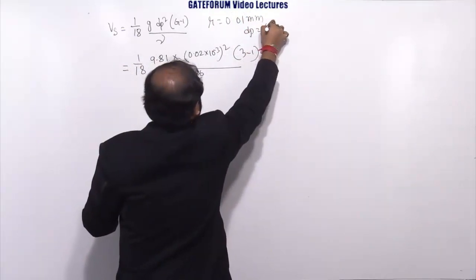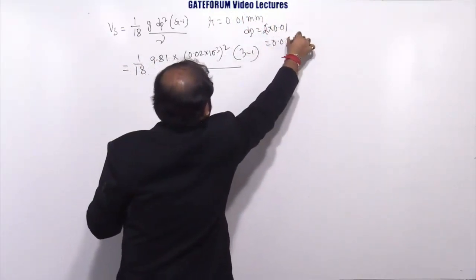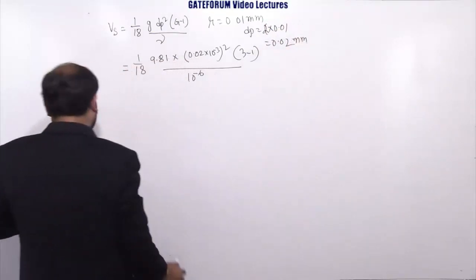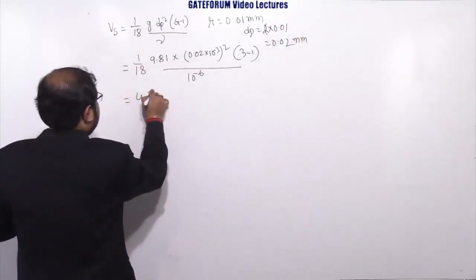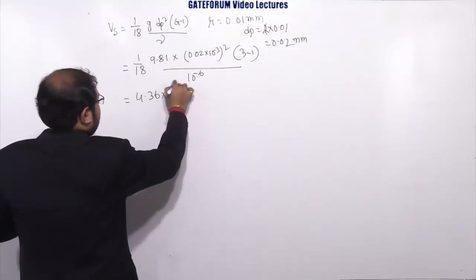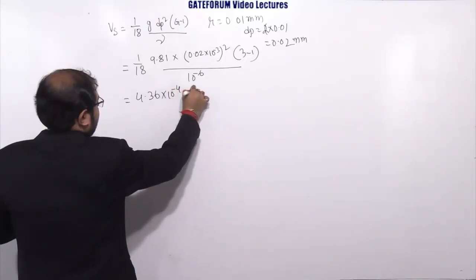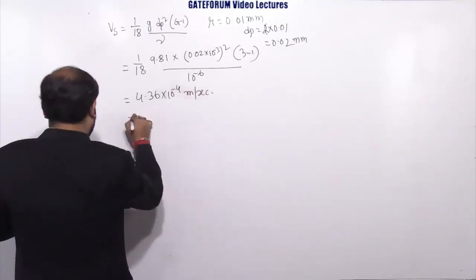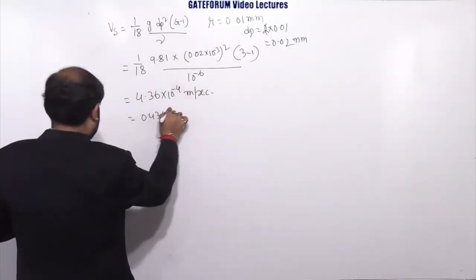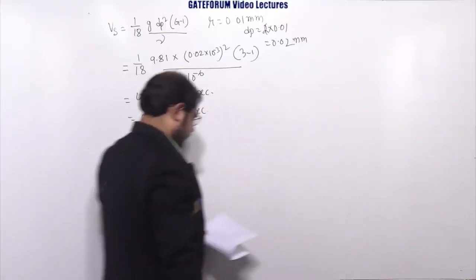That equals 4.36 × 10^-4 meter per second. 0.436 mm per second will be your answer.